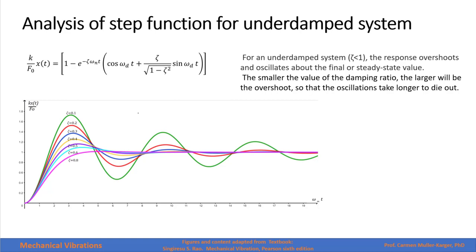For zeta equals 1, we have a critically damped system — the response reaches the final or steady state value most quickly without any oscillation. For an overdamped system with zeta greater than 1, the response reaches the steady state value more slowly with no overshoot because it does not oscillate.